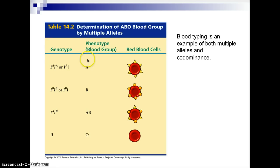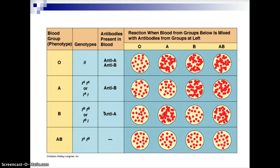For type B blood, the genotype would be I-B, I-B or I-B, lowercase i — that phenotypically gives you B blood type. Capital I-A, capital I-B demonstrates the codominant trait, giving blood type AB phenotypically. Two lowercase i's give blood type O. Blood typing is both an example of multiple alleles, because you have more than one allelic form, and a case of codominance as seen with I-A, I-B giving AB blood. We'll do a blood typing example in class.